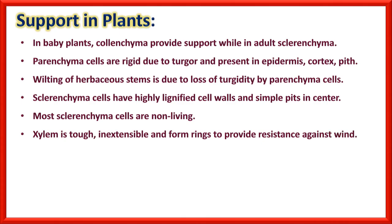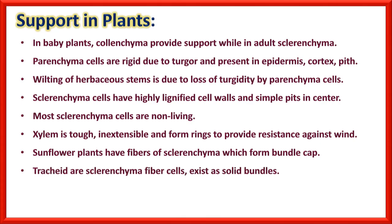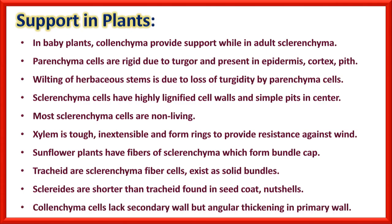Xylem is tough, inextensible, and forms rings to provide resistance against wind. Sunflower plants have fibers of sclerenchyma which form bundle caps. Tracheids are sclerenchyma cells which are actually fiber cells and exist as solid bundles, while scleroids are also sclerenchyma cells but shorter than tracheids, found in seed coat and nut shells. Collenchyma cells lack a secondary wall but angular thickening is seen in the primary wall.